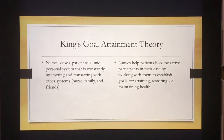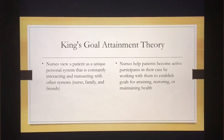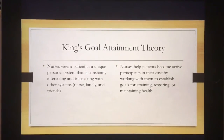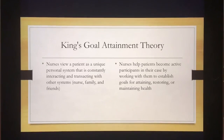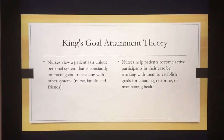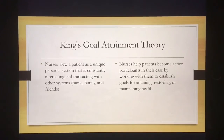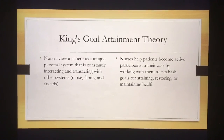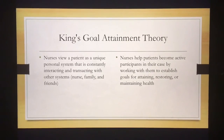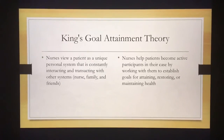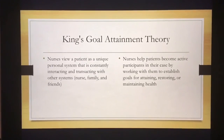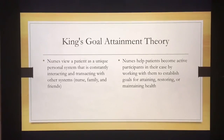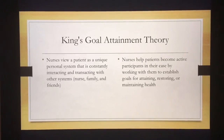Next, we have King's Goal Attainment Theory. Nurses should view a patient as a unique personal system that's constantly interacting and transacting with other systems. This basically revolves around the idea that every patient is unique and has a lot of things that make up their life and who they are. So we need to assist them in becoming active participants in their care by working with them to establish their own personal goals, as well as our goals in care plans for attaining, restoring, and/or maintaining health.